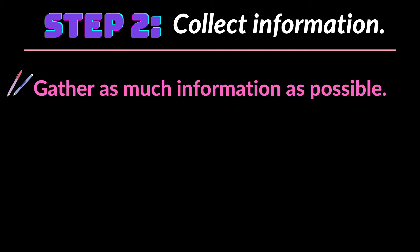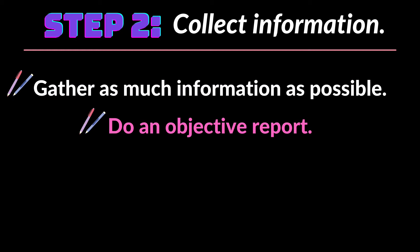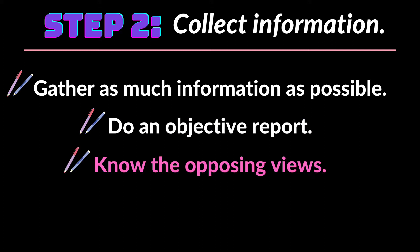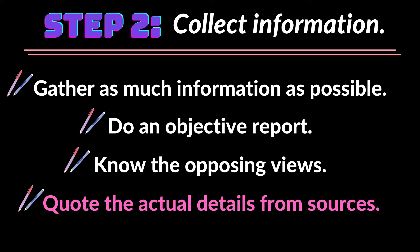The second step is to collect information about the topic. Gather as much information as possible, and as this is done, the writer must do an objective report. It is also important that the writer knows a lot about the opposing views. It will be an advantage if the writer can quote actual details from sources to avoid partiality or unfair treatment.